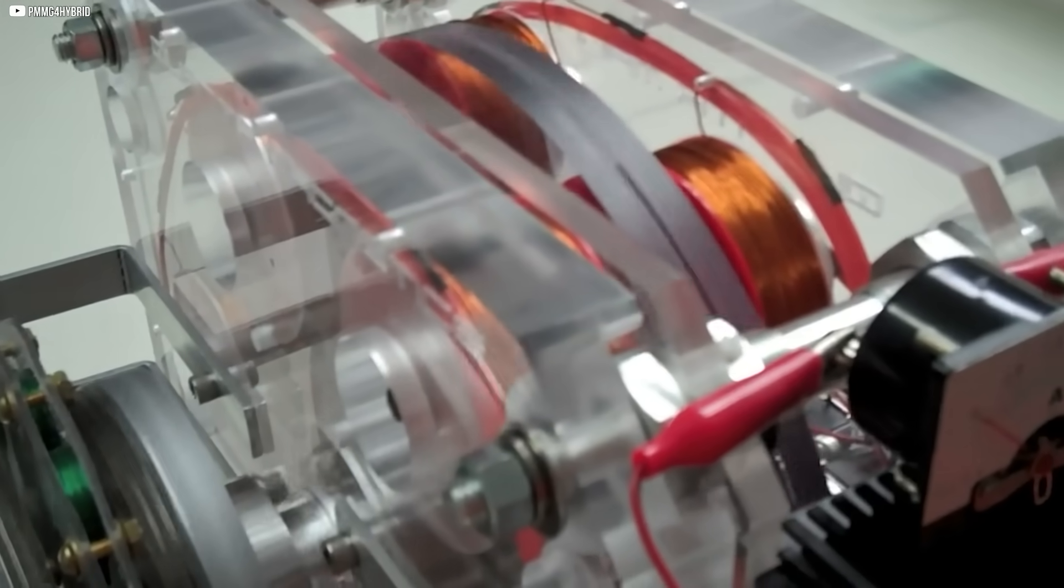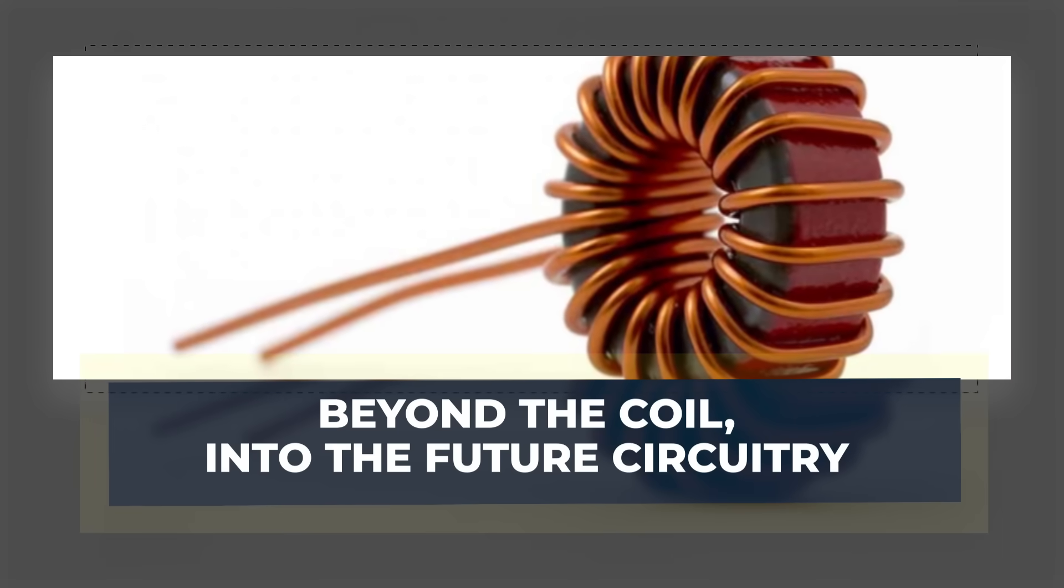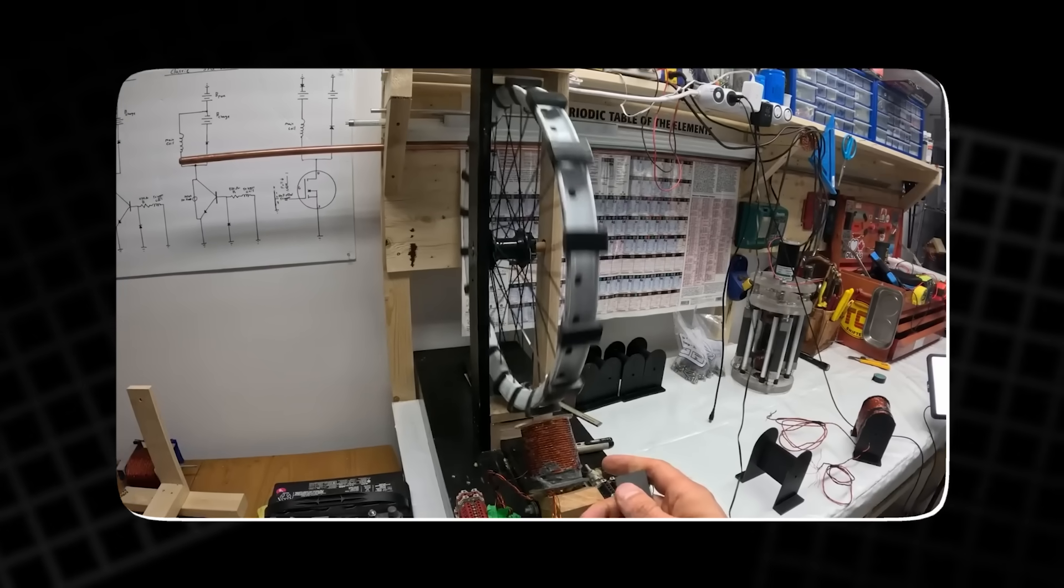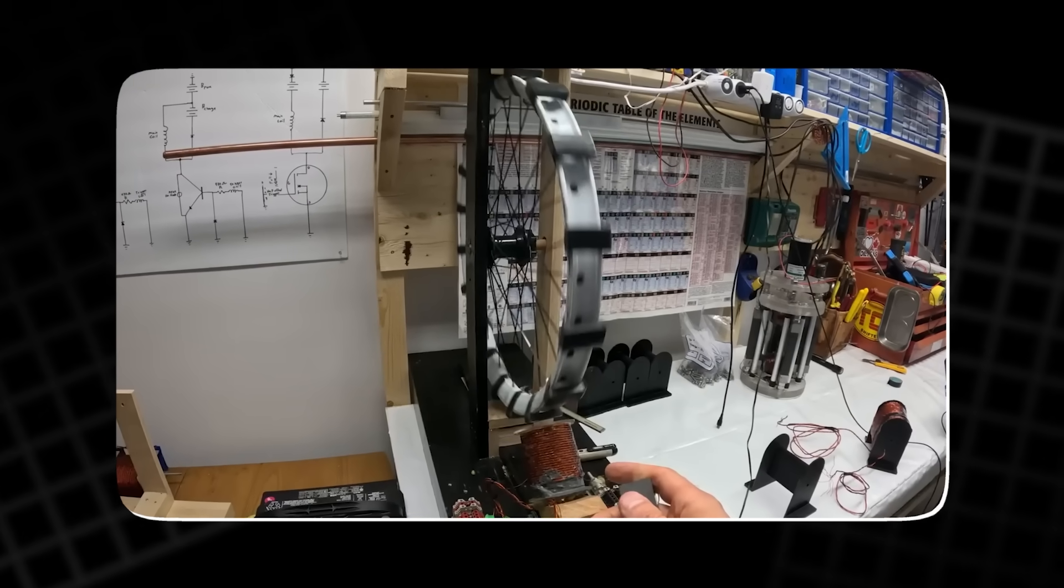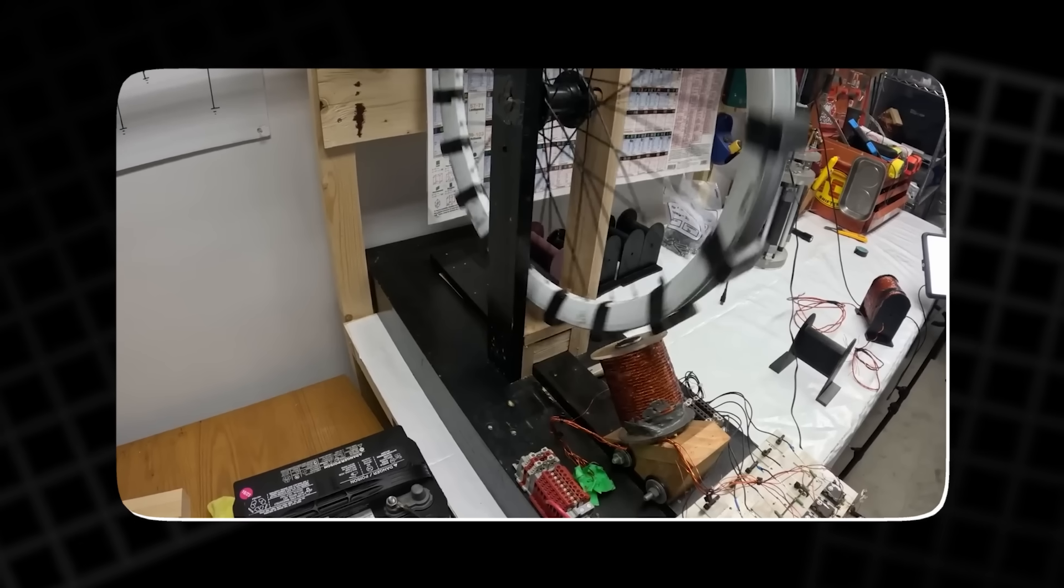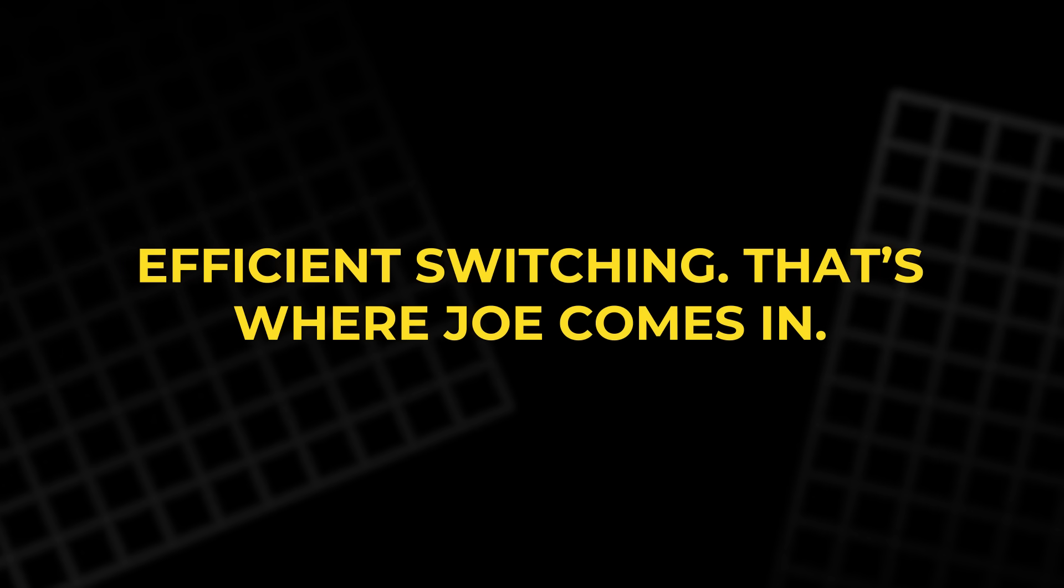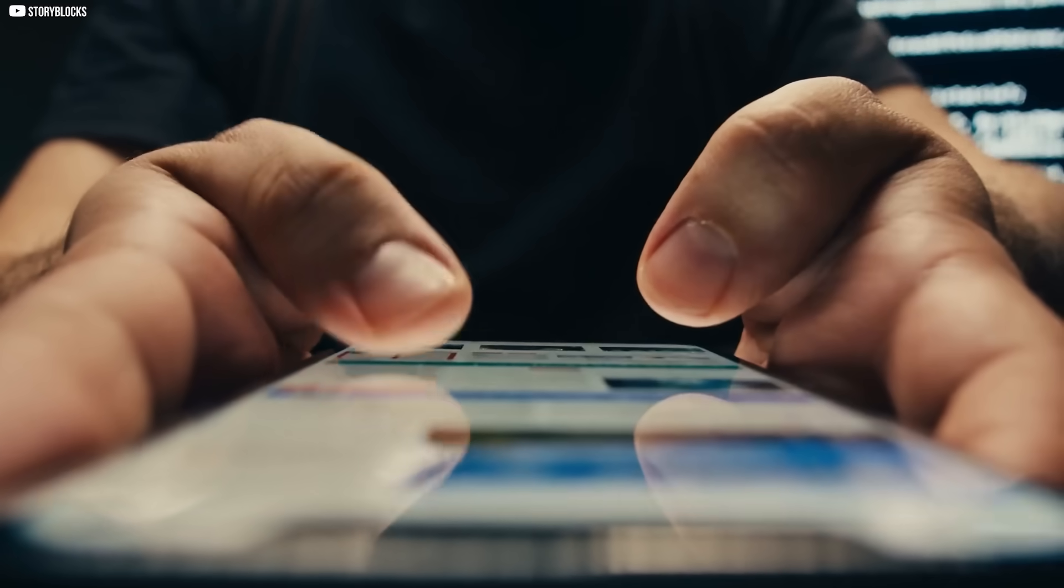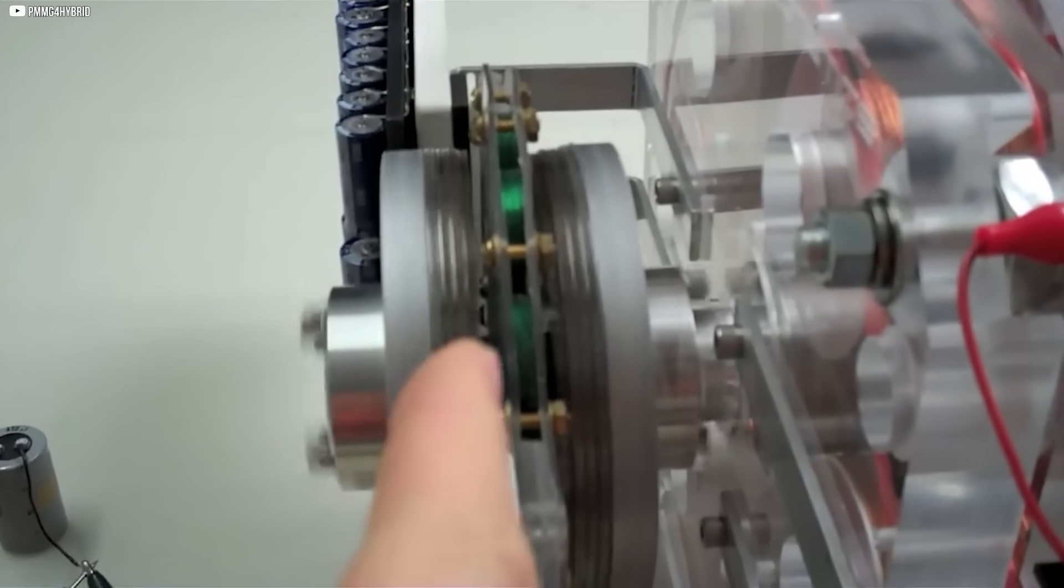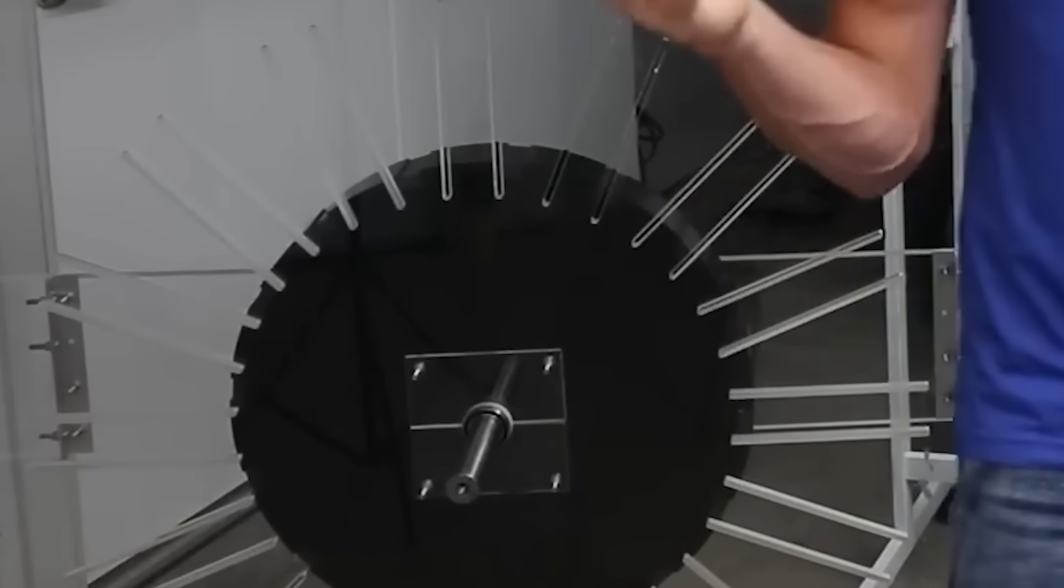Beyond the coil, into the future circuitry. The coils are just the beginning. To bring this technology to life, we need a brain. A control system that speaks the language of fast, clean, efficient switching. That's where Joe comes in. Joe Mullen, an electronics genius I connected with after posting the first video, has become a key part of this project. His passion for silicon carbide components matches mine.